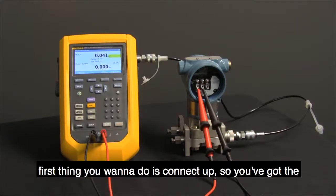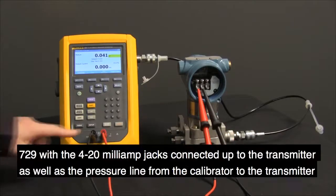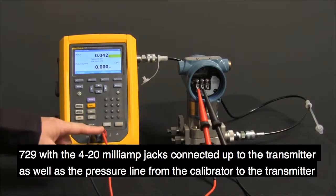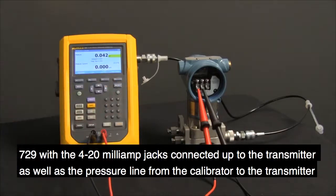First thing you want to do is connect up. You've got the 729 with the 4-20 milliamp jacks connected up to the transmitter as well as the pressure line from the calibrator to the transmitter.